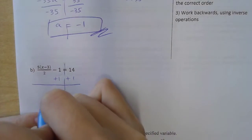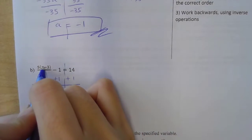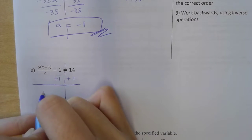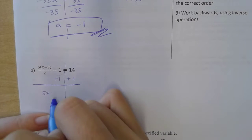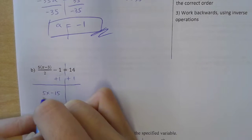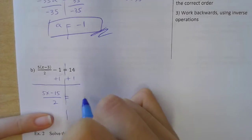All right, let's go on to this one. Okay, so then I'm gonna bring it and then you guys, I'm gonna go ahead and distribute again. So 5x minus 15 over 2 is equal to 15.